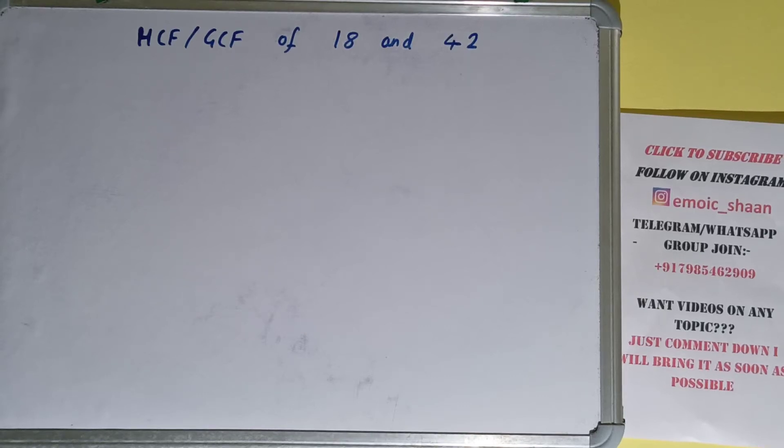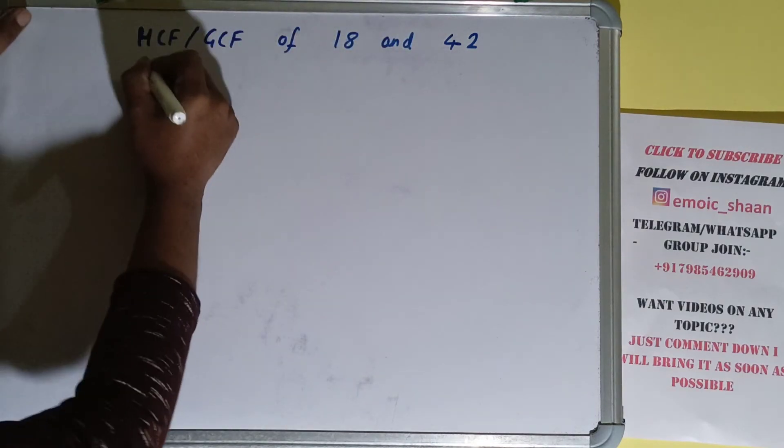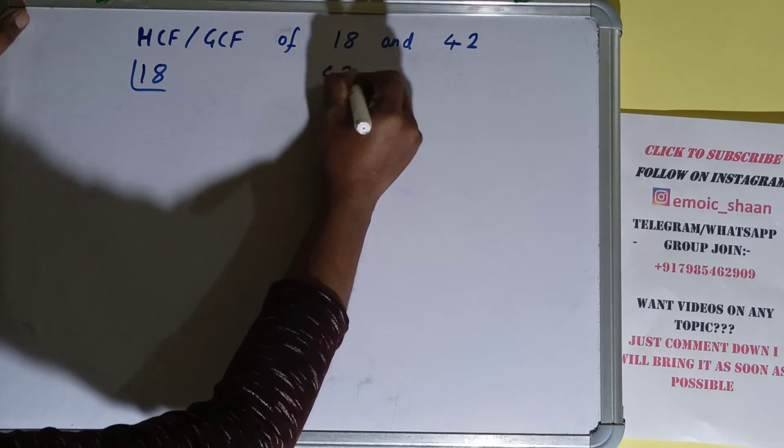Hello friends, in this video I'll be helping you with the HCF or GCF of the numbers 18 and 42. So let's start. To find it out, we first need to write each of the numbers separately and prime factorize each of them.